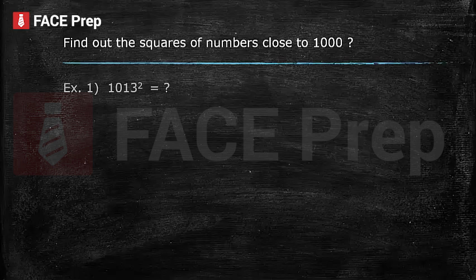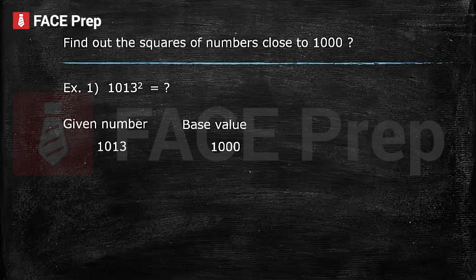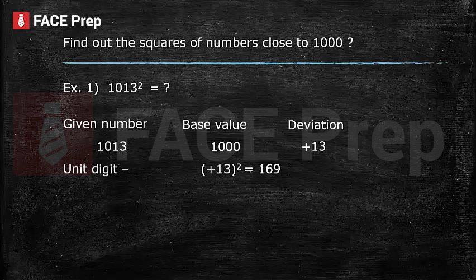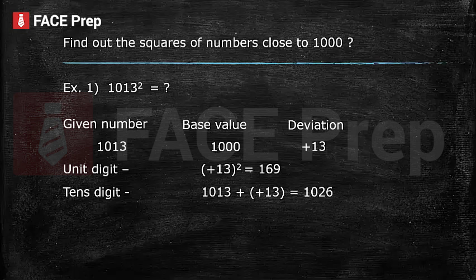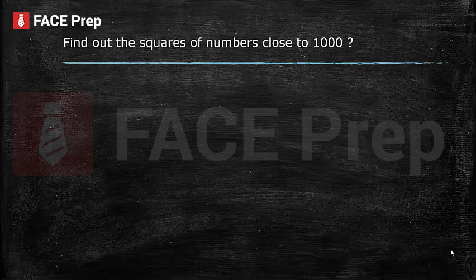Last category: find out the squares of numbers close to 1000. Let's take an example: find the square of 1013. The base value is 1000 and the deviation is plus 13, since 1013 minus 1000 gives us plus 13. The unit digit is the square of the deviation: the square of 13 is 169. The tens digit is the given number plus the deviation: 1013 plus 13 gives us 1026. The final answer is 1026169.